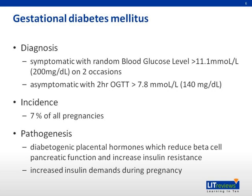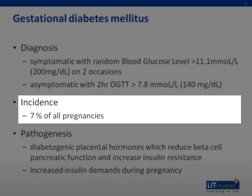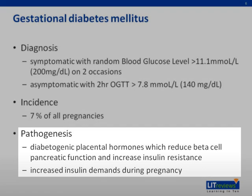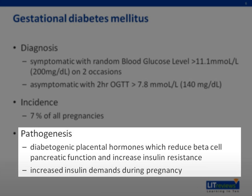Gestational diabetes mellitus has an incidence of 7% in all pregnancies. Pathogenesis involves diabetogenic placental hormones which reduce beta cell pancreatic function and increase insulin resistance, resulting in increased insulin demands during pregnancy.